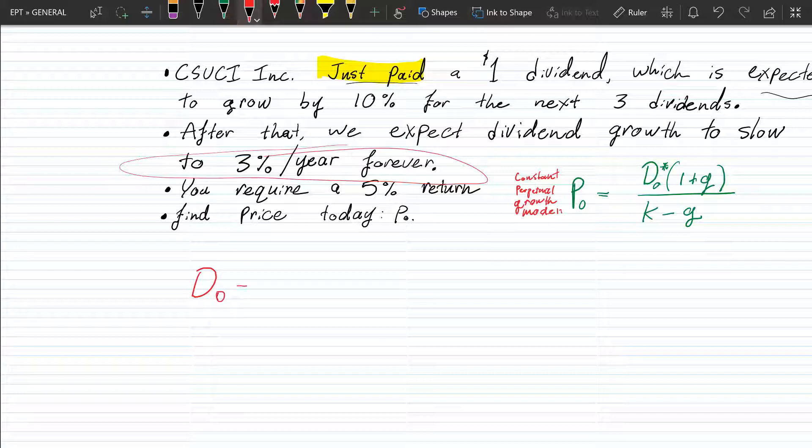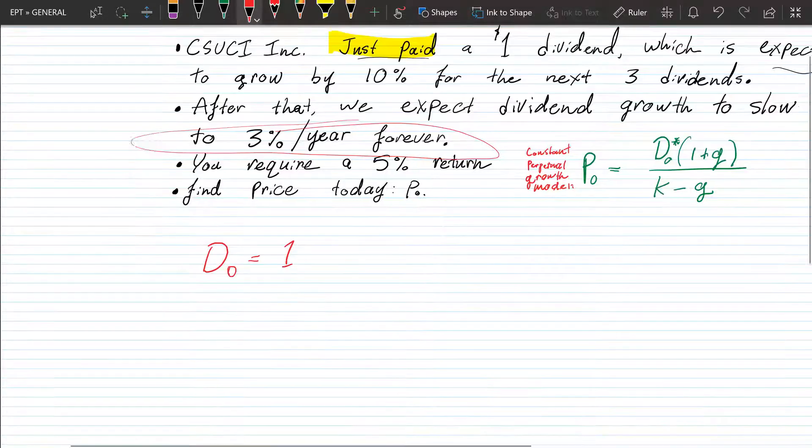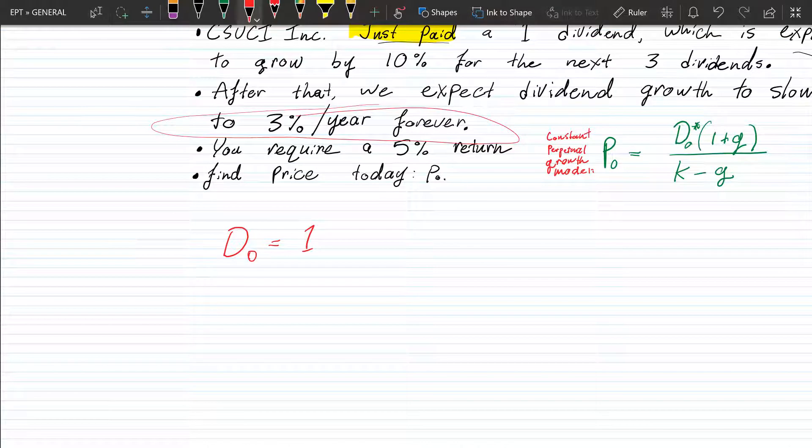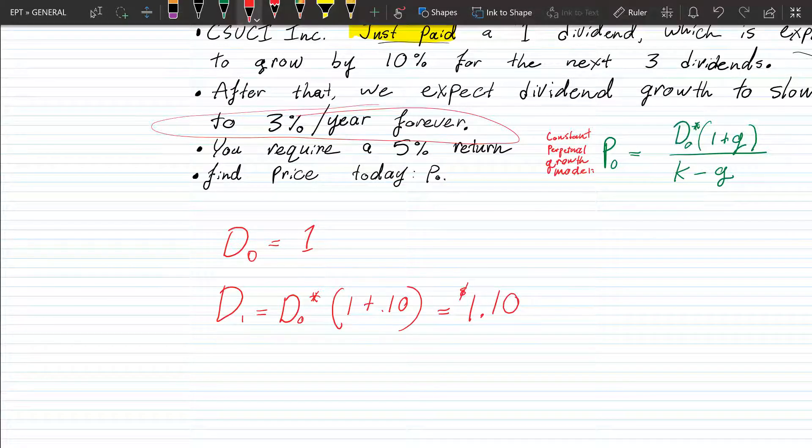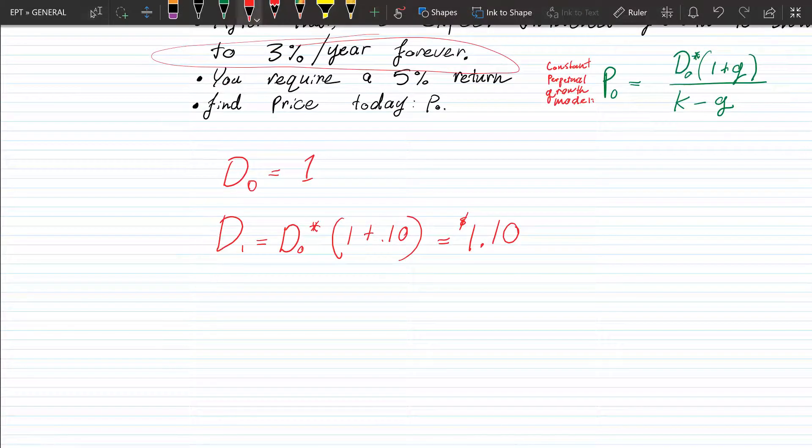I'll just write it here. So this is going to be D0, okay? It's $1. So D1, in that case, is going to be what? D0 times the growth rate, which we have at 10% right now. So 1 plus 0.10, okay? And then you got $1.10.